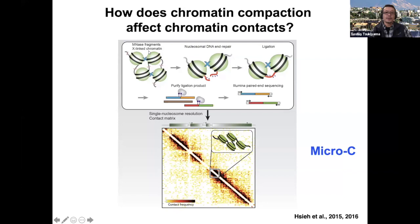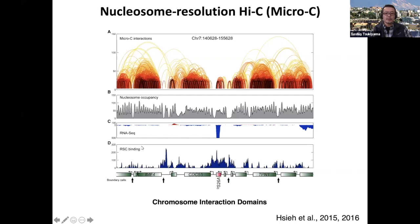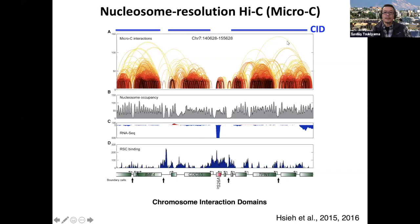This resolution issue was recently solved by our friends at the University of Massachusetts, Oliver Rando's lab, who modified the protocol to digest chromatin after cross-linking with micrococcal nuclease to nucleosome levels. As a result, you can see each dot as basically nucleosome-to-nucleosome contacts — you can tell exactly which nucleosomes are contacting with each other. This is very powerful. In their 2015 paper, they were able to show chromatin interactions at this resolution and demonstrate that budding yeast has TAD-like structures called CIDs or chromosomal interaction domains. Importantly, CID boundaries are at gene promoters, with a very close connection to chromatin regulators as well.